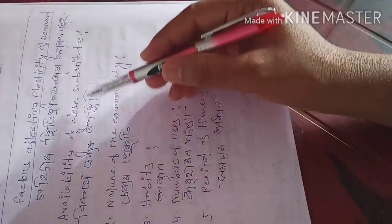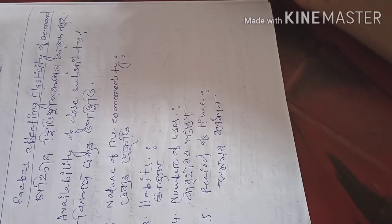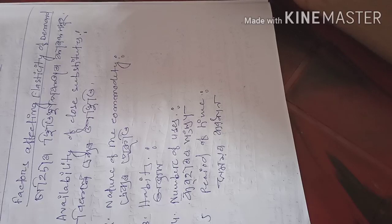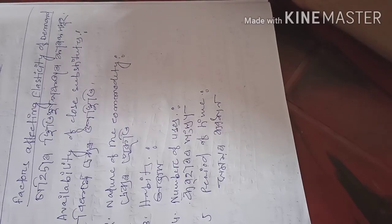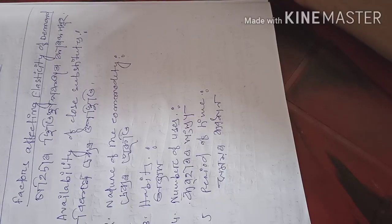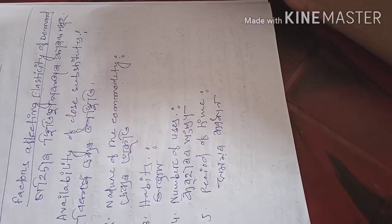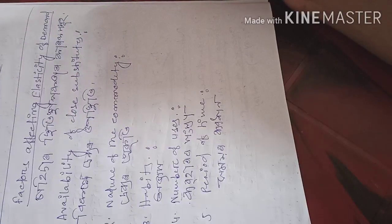The first factor is availability of close substitutes. If the substitutes of a good are closely available in the market, then the elasticity will be high. For example, if tea and coffee — if the price of tea increases, then people will go for coffee. So the demand for coffee will increase and demand for tea will decrease. There will be a huge change in demand due to the change in price, so the elasticity will be high.